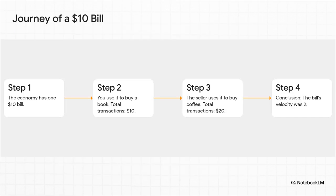This slide makes it crystal clear. Imagine a tiny little economy with only one $10 bill in it. So you take that $10 and you buy a book. Then the bookseller takes that exact same $10 bill and uses it to buy coffee. Now stop and think about that. That one single $10 bill just supported $20 of economic activity. Its velocity was two because it changed hands twice. That's it. That's the whole concept.